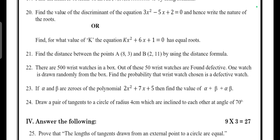Find the value of discriminant of the equation 3x² - 5x + 2 = 0 and hence write the nature of the roots. OR find the value of k for the equation kx² + 6x + 1 = 0 has equal roots. Next, find the distance between points A(8, 3) and B(2, 11) using the distance formula.